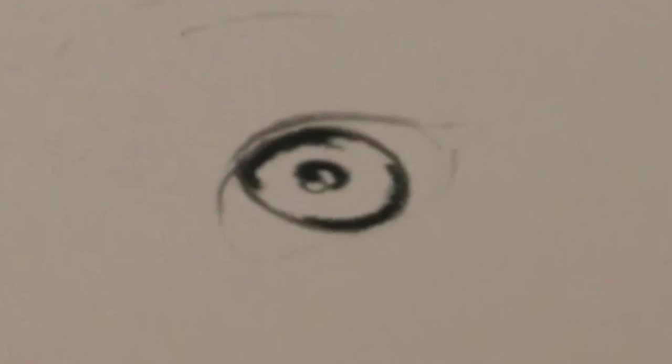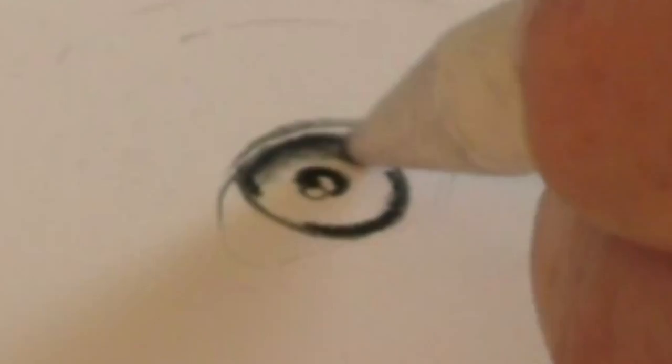Now once I've got that darkness on, what I'll do then is use the paper stump to just spread it out. So I use the paper stump really like I'm shading with a pencil. And then I've got a nice base tone that I can work into.